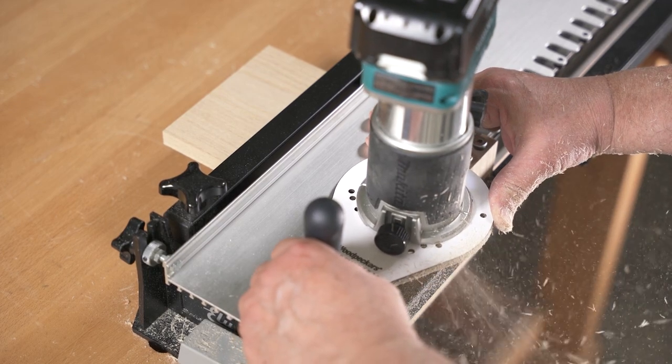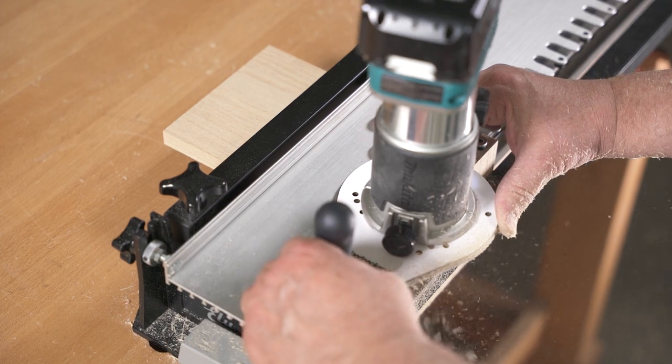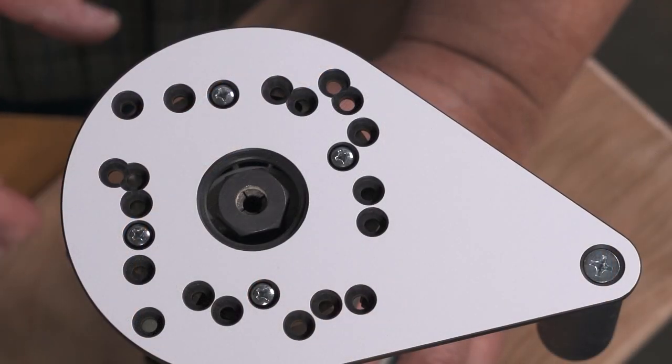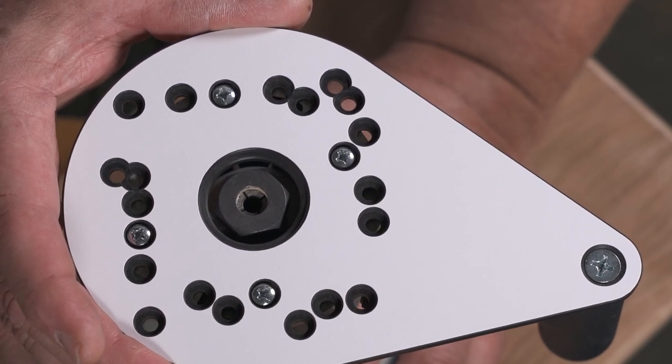We also made StableMax the ideal base for template guide bushing work. The mounting holes are slightly oversized and counterboard so you can center the plate on the router collet.